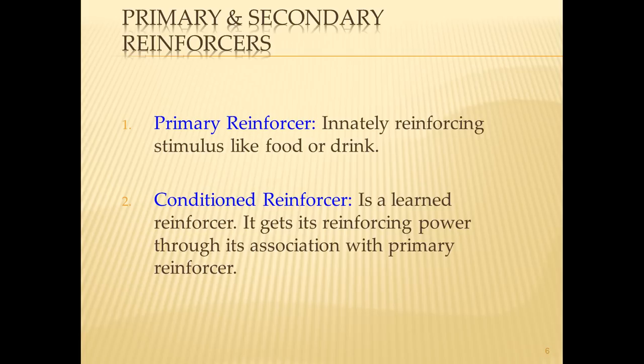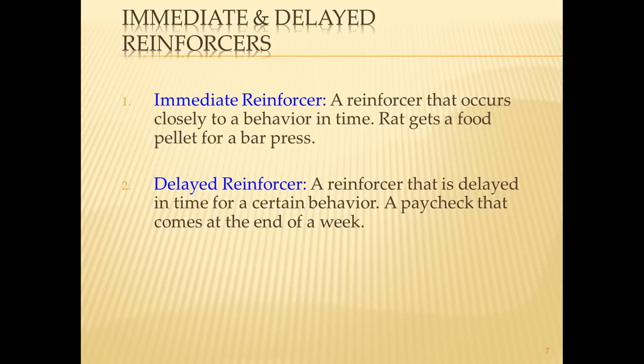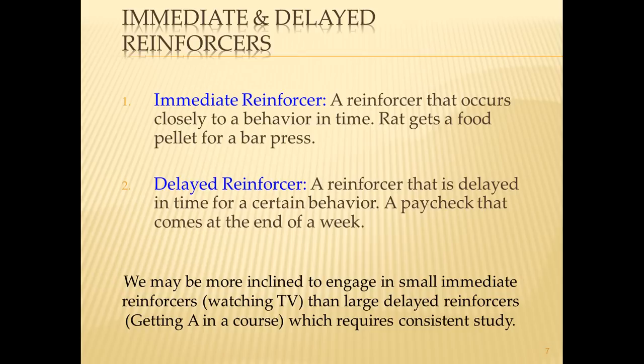In addition to the types of reinforcers, there's also the question of how often they occur and how close to an event they occur. An immediate reinforcer happens closely in time to the behavior — you press the bar and get a pellet of food. A delayed reinforcer is delayed after a behavior, like a paycheck. We are more inclined to engage in behaviors with immediate reinforcers because for most of evolutionary history, delayed reinforcers didn't exist — if it wasn't immediate, it didn't reinforce the behavior.